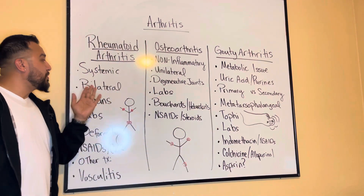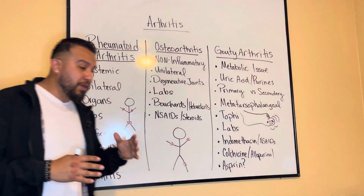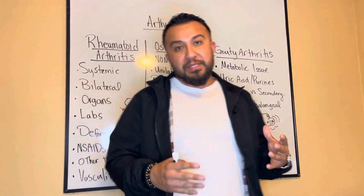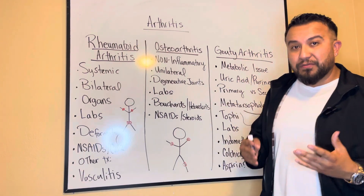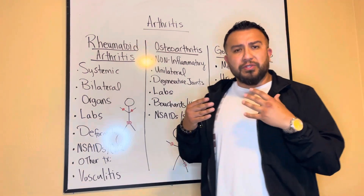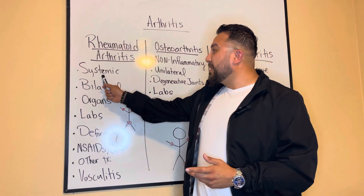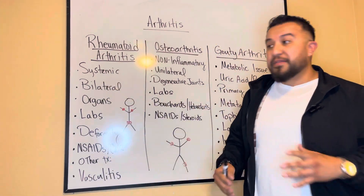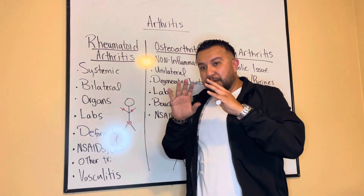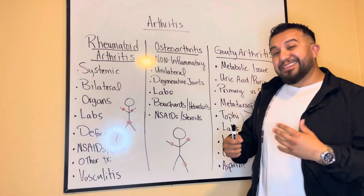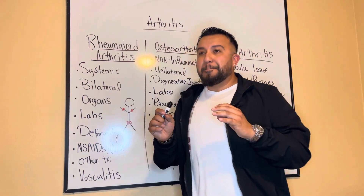When it comes to rheumatoid arthritis, you have to remember that it's a systemic issue. This is where your immune system — your white blood cells — for whatever reason, don't identify your own tissue and start destroying it. Because it's a systemic issue, it's going to happen all over the body: the pleura, the pericardial sac, the membranes of the eyes and kidneys. So it's a multi-organ disease.